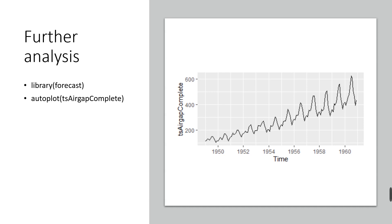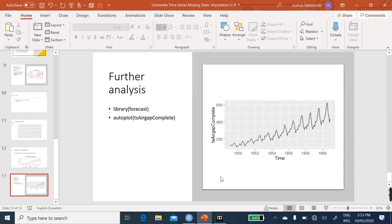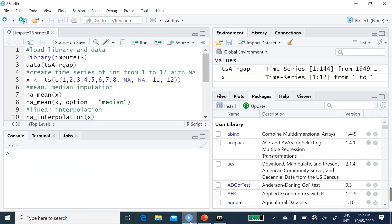So the moment you have your complete dataset without the missing values, then you can proceed for further analysis. For instance, I may be interested in making forecasts. Then I will need a library forecast, and the starting point is to plot the graph now without any missing value. This is just what we have done here. So now we are going to illustrate what I have done very quickly on our RStudio.